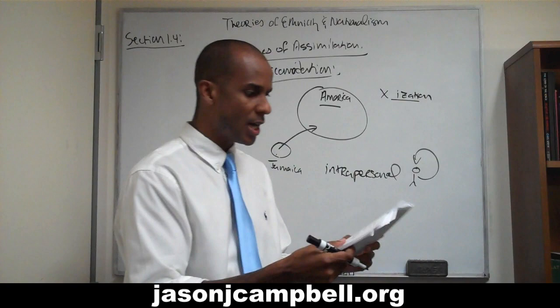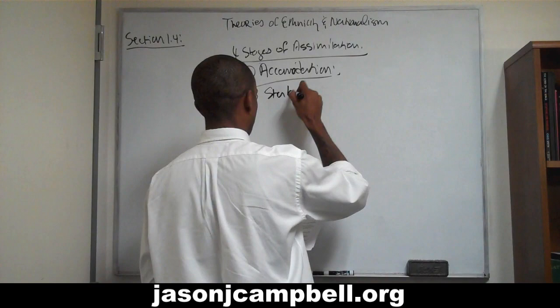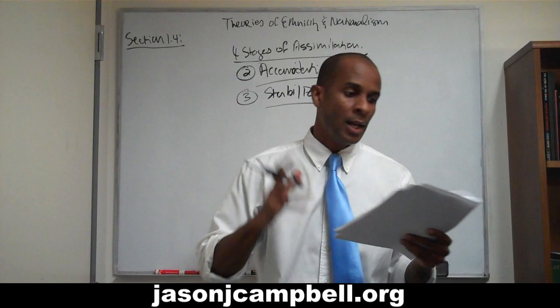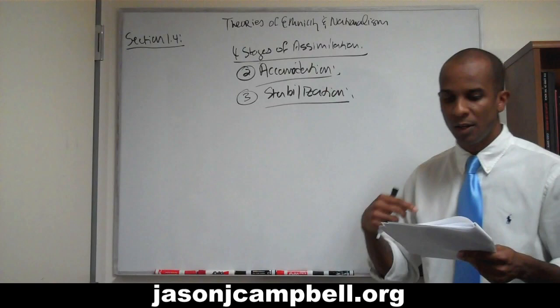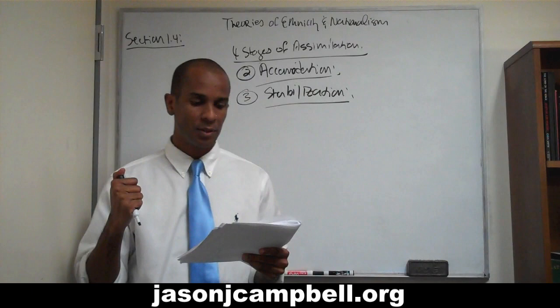Number three is stabilization. Cohabitation between migrated ethnic populations under the auspice of nationalism — that's the ideal. You have, say, a large Jamaican community and a large Cuban community in South Florida, and stabilization is about how those interethnic populations cohabit under a shared national identity.